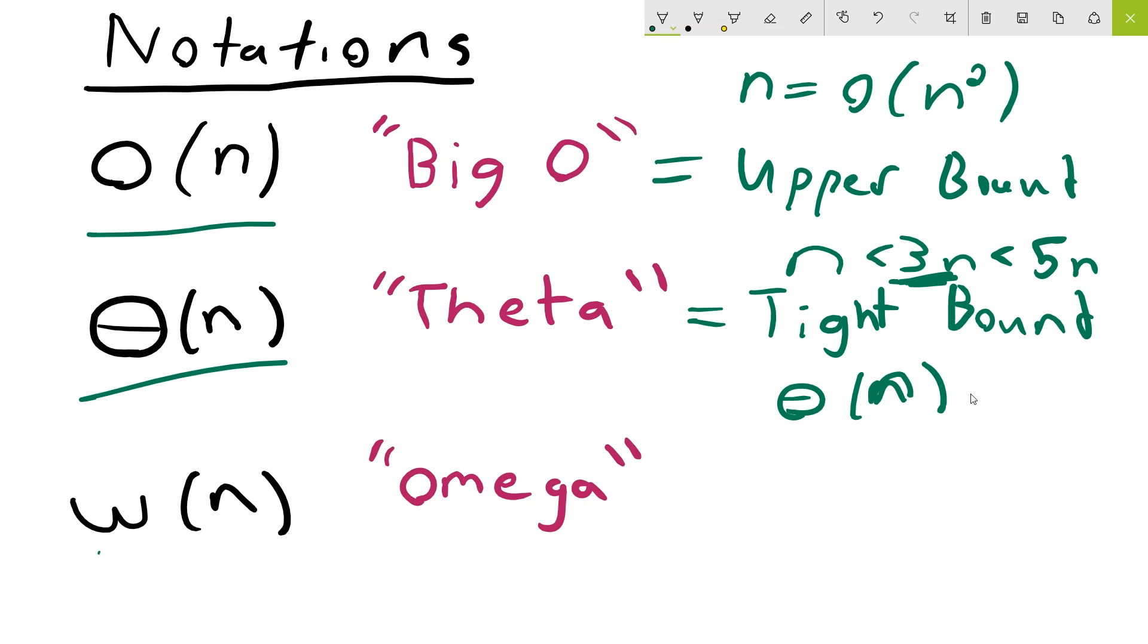Finally, we'll look at omega of n. And as you might have guessed, this represents a lower bound. For an example, let's imagine that we had the functions n³ and log of n. Whenever we plug in a value to n³, it is always going to be higher than that same value plugged into log n for big inputs. So we can say that n³ is omega of log n.